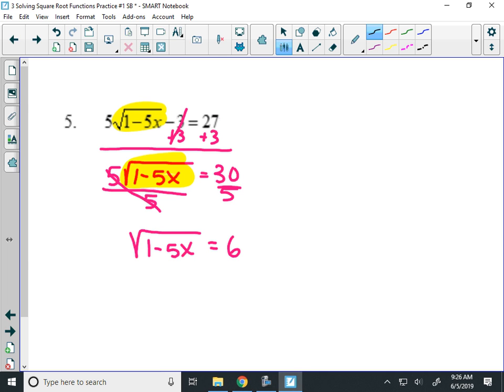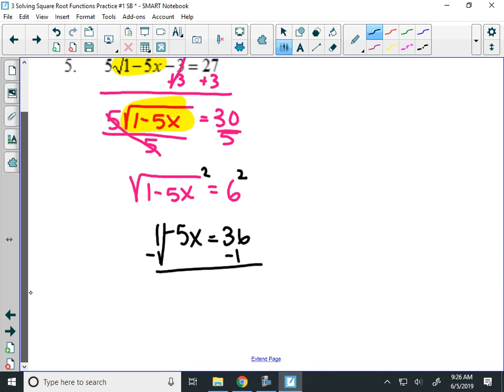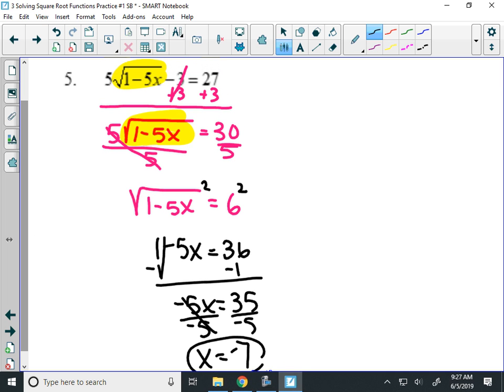Now I'm isolated, so I can square both sides of the equation. Get 1 minus 5x equals 36. And go ahead and keep solving. Subtract 1, negative 5x equals 35, and then divide by negative 5. Here that will give me x equals negative 7. So let's check our work. Two ways to do it. I'm going to graph this one this time.